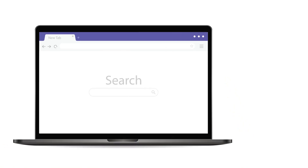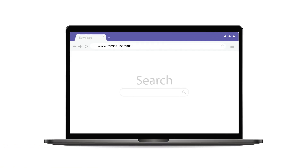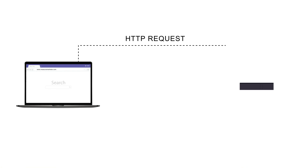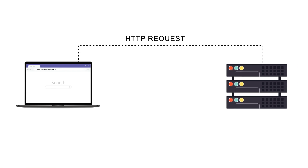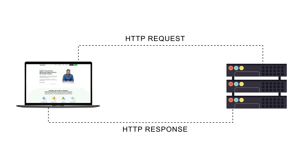Before we get into A/B testing, there's something we as digital marketers need to understand: how web servers and web browsers communicate with each other. Web servers and web browsers communicate by sending HTTP requests and HTTP responses. When a browser wants to make a request, it makes an HTTP request to the server, and for every HTTP request made by the browser, the server has to respond with an HTTP response.